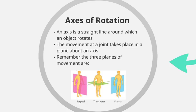We need a definition of what an axis is. An axis is a straight line around which an object rotates — that's important to note and remember for the exam. Movement at a joint takes place in a plane about an axis, and we've always said that movement takes place at joints where two bones meet.